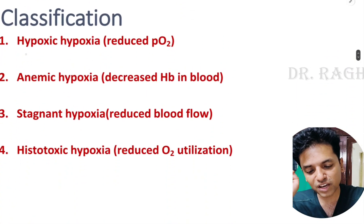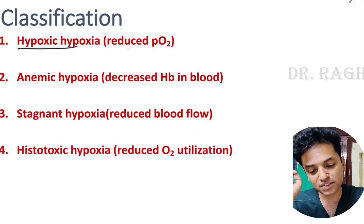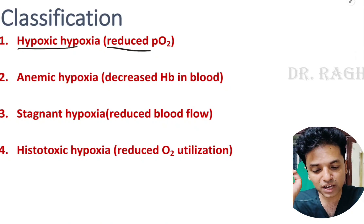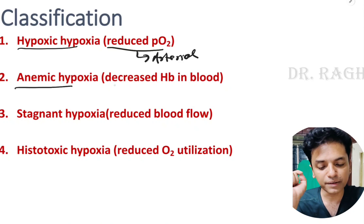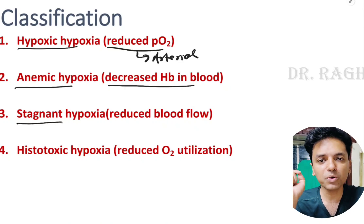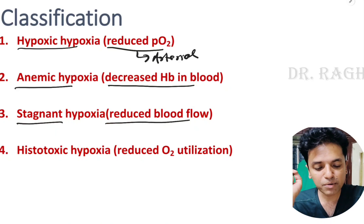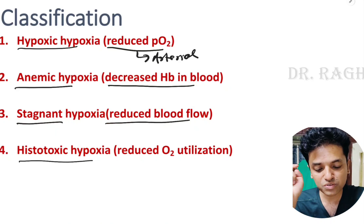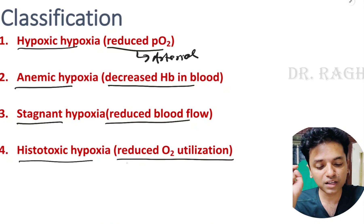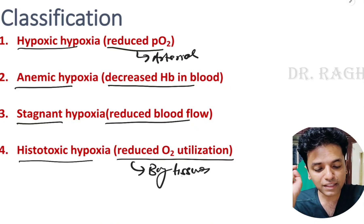So the four types of hypoxia are: hypoxic hypoxia — due to reduced arterial pO2; anemic hypoxia — due to decreased hemoglobin; stagnant hypoxia — due to reduced blood flow to tissues; and histotoxic hypoxia — due to reduced oxygen utilization by tissues.